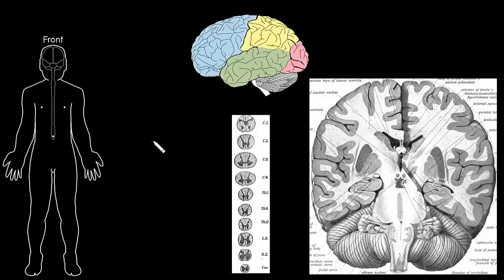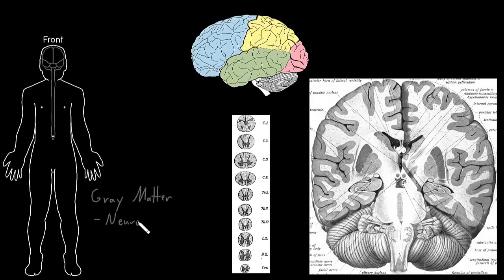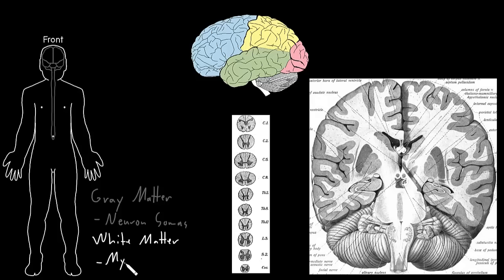In this video, I'm going to talk about gray and white matter. In the central nervous system, which is mostly the brain and the spinal cord, there are areas called gray matter that contain most of the neuron somas. So most of the neuron somas in the central nervous system are found in the gray matter. And then there are other areas called white matter, and in the white matter of the central nervous system is most of the myelinated axons.